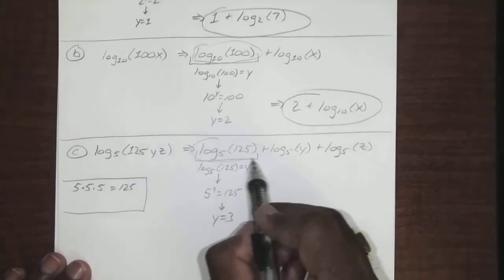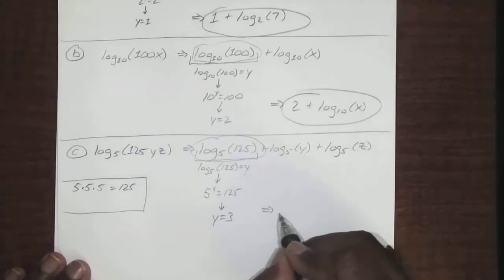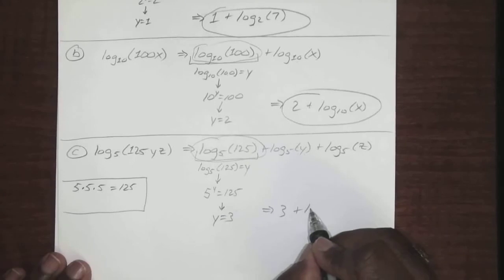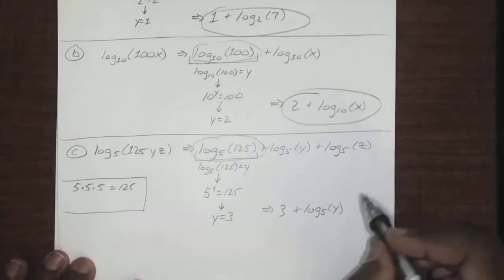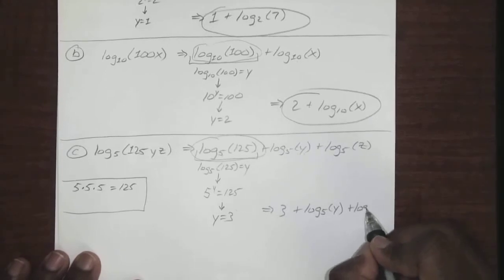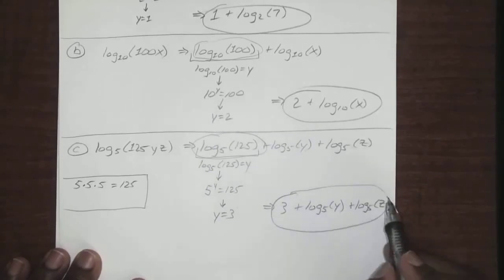Okay, so this entire term just becomes 3. That gives us 3 plus log base 5 of y plus log base 5 of z. And that is your answer.